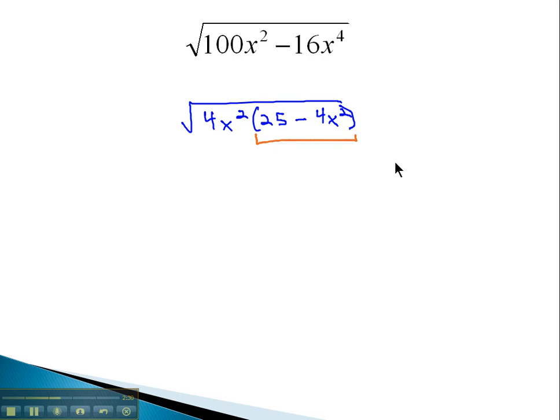At this point, we can factor the difference of squares further if we want, though this step is not necessary because we won't be able to take the square root of the 5 minus 2x, 5 plus 2x.